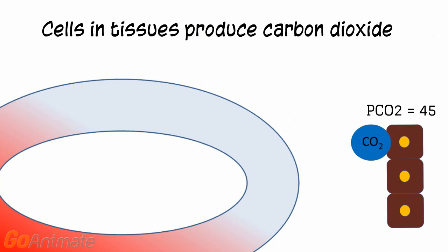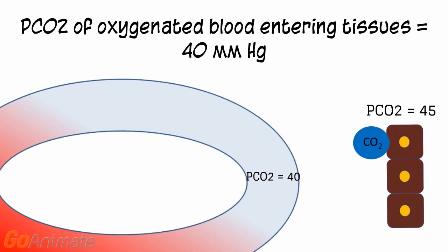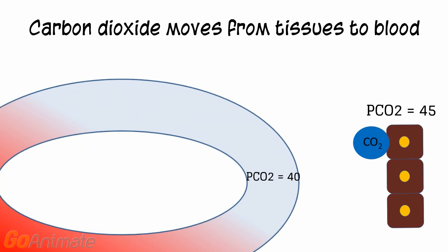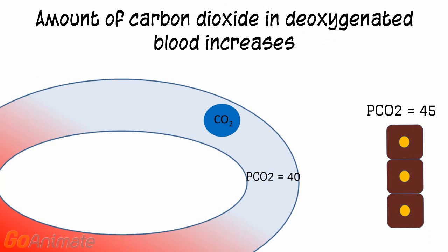The tissues produce carbon dioxide, or CO2, and the tissue PCO2 is 45 mmHg. The PCO2 of oxygenated blood entering the tissues is 40 mmHg, which is lower than the tissue PCO2 of 45. Carbon dioxide follows its partial pressure gradient and diffuses into the blood, causing the blood PCO2 to rise to 45 mmHg.